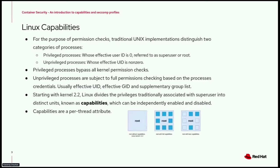Looking at the image on this slide, we have a box labeled root — this is before Linux kernel 2.2. At that point, root processes were assigned full privileges and you could not remove privileges from those processes. After Linux kernel 2.2, the same root process can have different capabilities — the blue boxes — assigned individually. The third image shows a root process with only three capabilities assigned, meaning it can only use those capabilities and not the others that were removed.